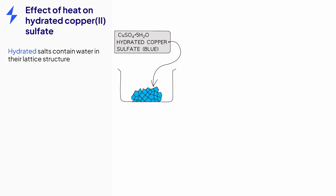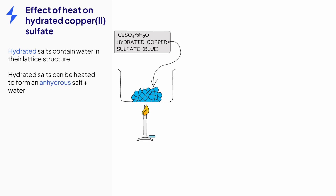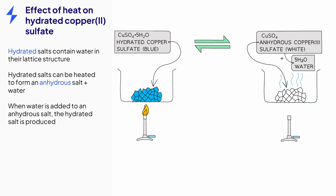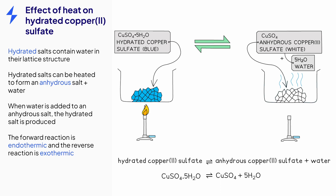When hydrated salts like copper(II) sulfate are heated, the hydrated salt loses its water, so it is dehydrated and produces the anhydrous salt and water. Anhydrous copper(II) sulfate is a white solid, so you would see a color change as it is heated. This reaction is an example of a reversible reaction, as it can be reversed by adding water to the white anhydrous copper sulfate to produce the blue hydrated copper sulfate. The word and symbol equations are shown here. Remember to include the reversible symbol to show that it is a reversible reaction.